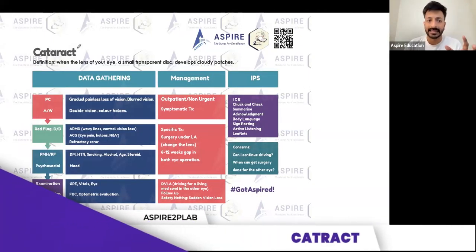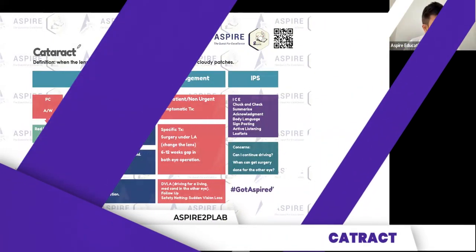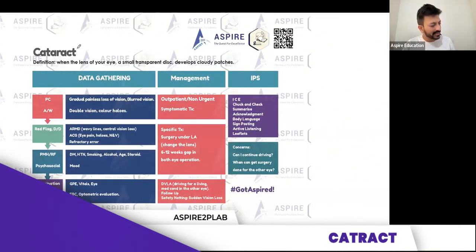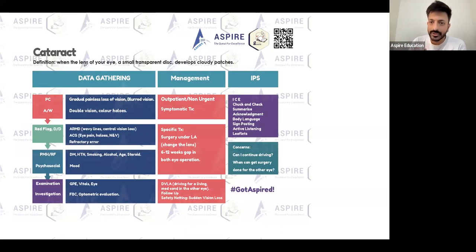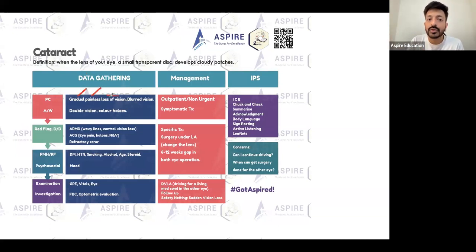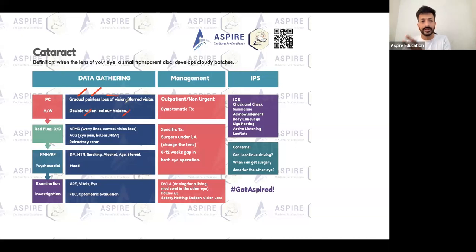Cataract is probably the most important and commonest eye condition you will see. The presenting complaint is loss of vision — not sudden, but gradual. It's a gradual, painless loss of vision. Patients may also have blurred vision, colored halos around lights, but mainly gradual painless loss of vision — that is cataract.